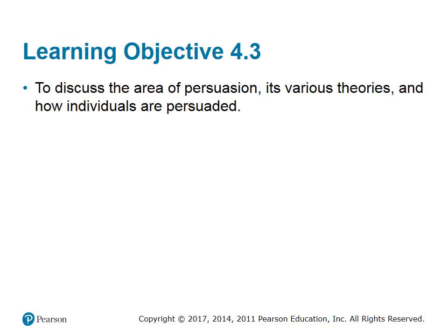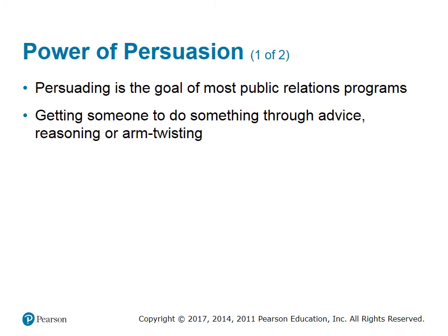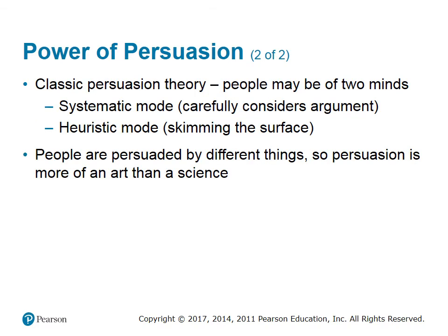Learning Objective 4.3: to discuss the area of persuasion, its various theories, and how individuals are persuaded. Persuading is the goal of most public relations programs. Persuasion means getting another person to do something through advice, reasoning, or just plain arm-twisting. Classic persuasion theory: people may be of two minds — systematic mode, where one carefully considers the argument, or heuristic mode, where one skims the surface. People are persuaded by different things, so persuasion is more of an art than a science.